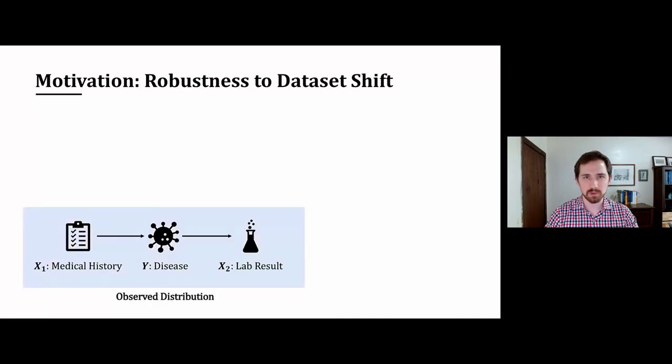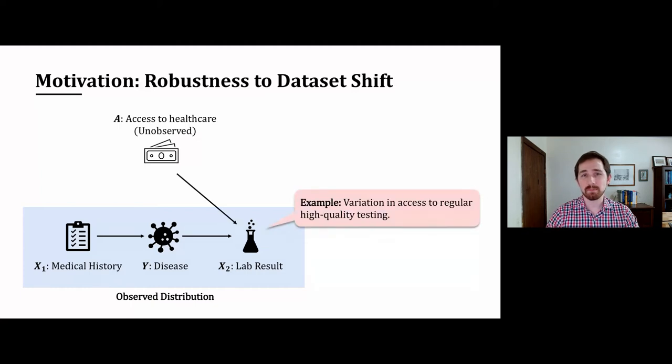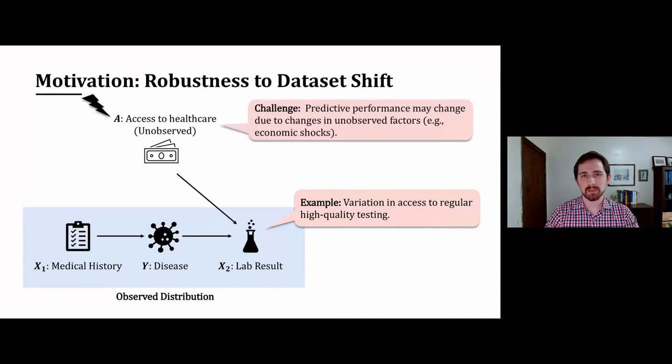This is our observed distribution, but there may be other important unobserved variables with important causal relationships of their own. For instance, access to healthcare could have an effect on both the quality and the frequency of laboratory testing in our dataset. If an individual can't access high-quality tests, then their lab results may differ.